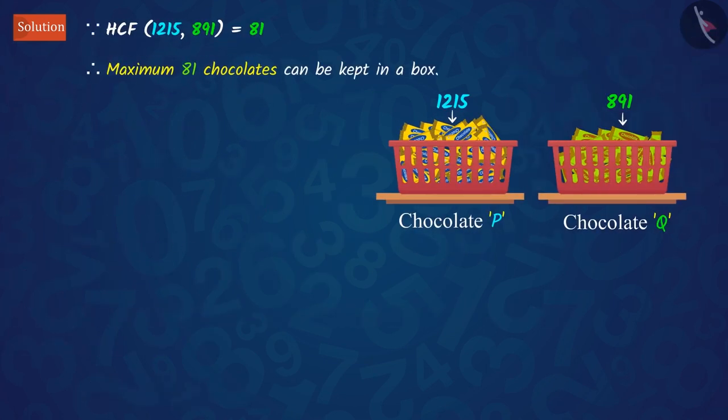So, maximum 81 chocolates can be kept in the box out of chocolate P and chocolate Q.